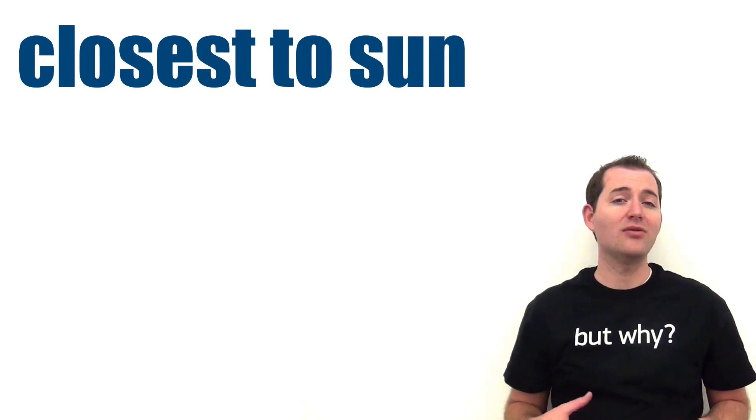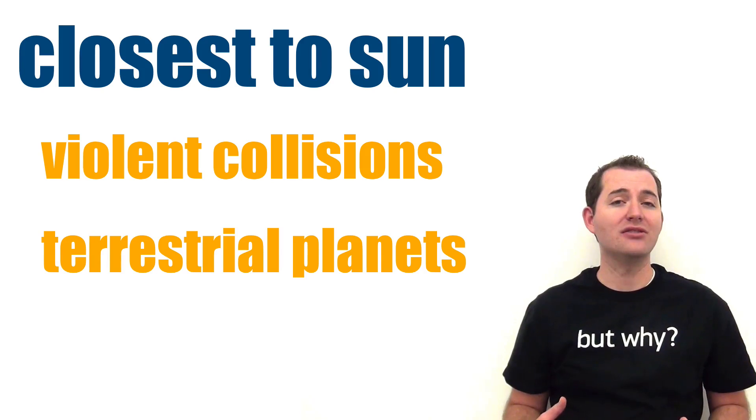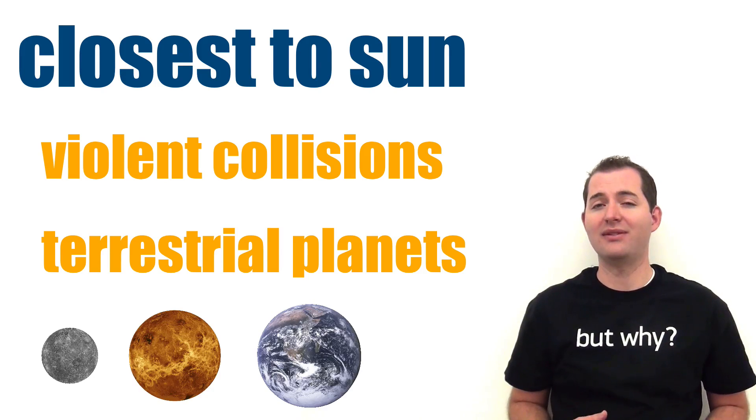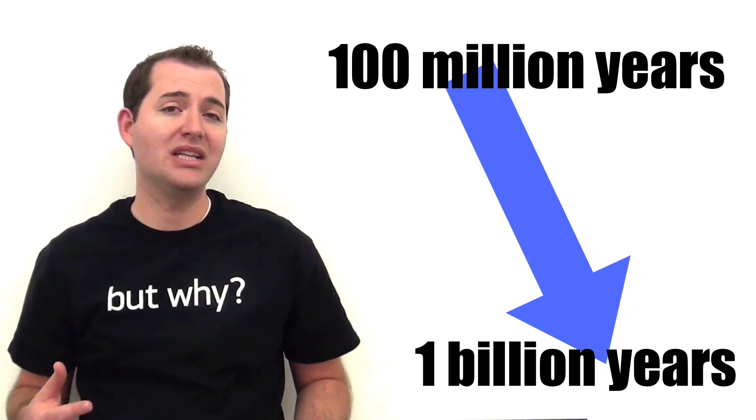The planetesimals and planet embryos closest to the sun generally collide with each other very violently. This process leads to typically terrestrial planets such as the four inner planets in our solar system. The time for this process can vary greatly, anywhere from between 100 million years all the way up to 1 billion years.